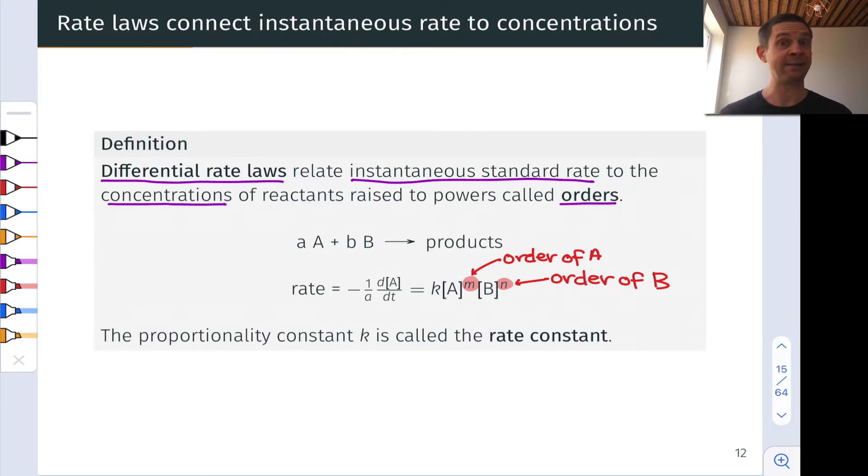And that's where the proportionality constant comes in. This k proportionality constant is known as the rate constant. We'll have a lot more to say about the rate constant after we talk about orders in a little more detail.